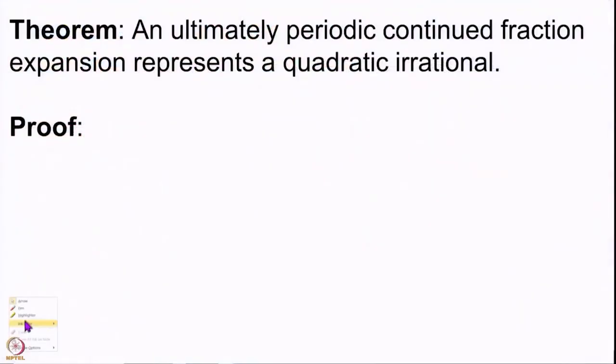The result we want to prove is that whenever you have an ultimately periodic continued fraction you get a quadratic irrational, and also the converse. We have split this proof into two parts: we will prove that an ultimately periodic expansion gives a quadratic irrational, and then that a quadratic irrational comes from an ultimately periodic continued fraction expansion. Let us begin our proof — this proof is very interesting.